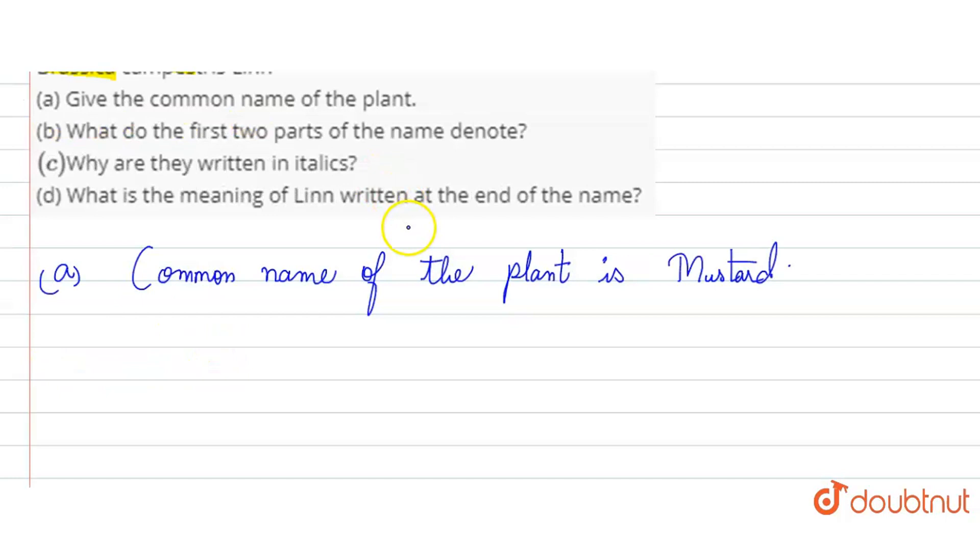The second part we have asked in the question, what do the first two parts of the name denote? So guys, Brassica denotes generic name, genus name, and campestris denotes our species name.